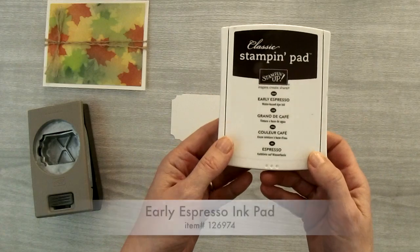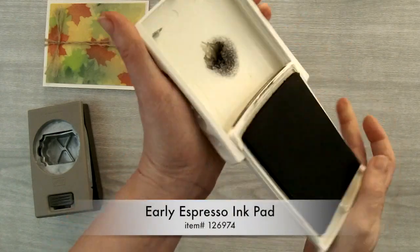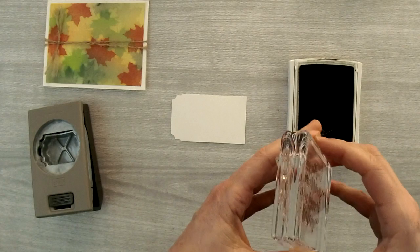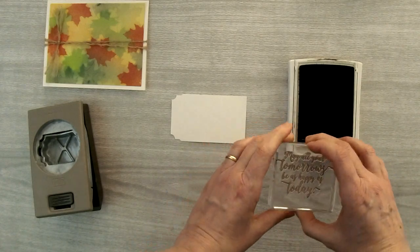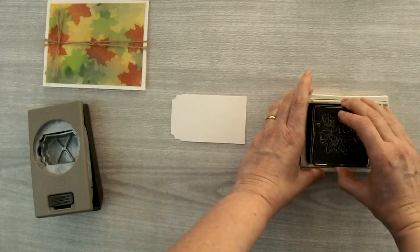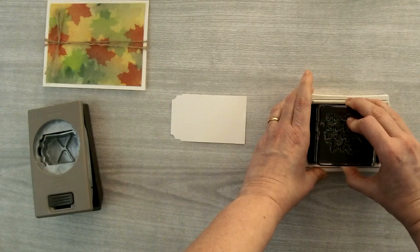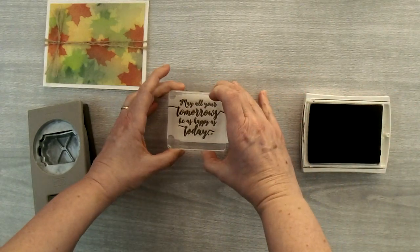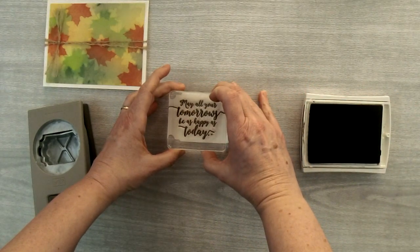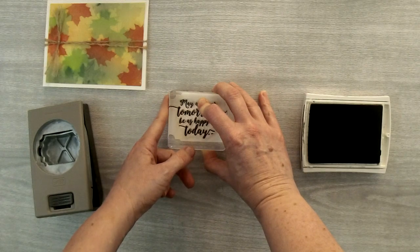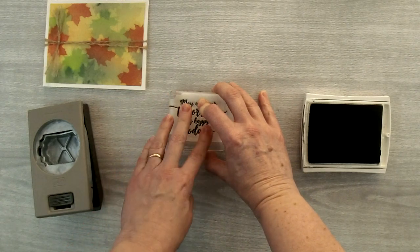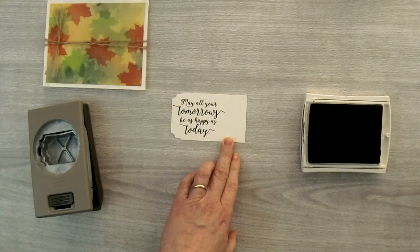So I've got my Early Espresso ink pad here. And I've got this beautiful greeting that says, May all your tomorrows be as happy as today. And I'm just going to ink this up. And I'm going to center it on the side here. The edge of my stamp is going to hit the edge of this punched end right here. I'm going to stamp that down.